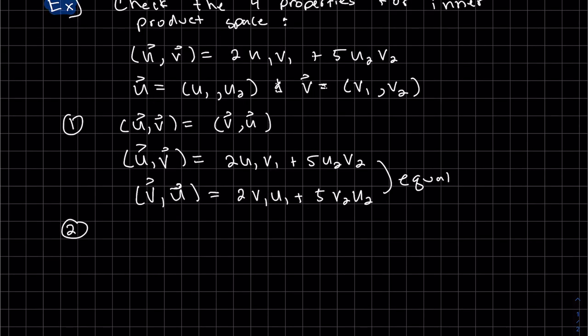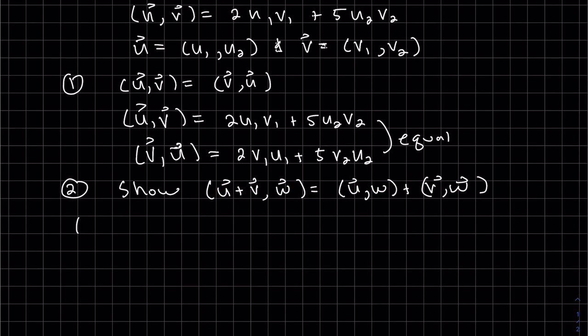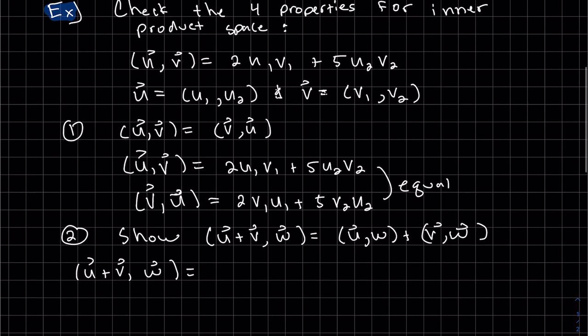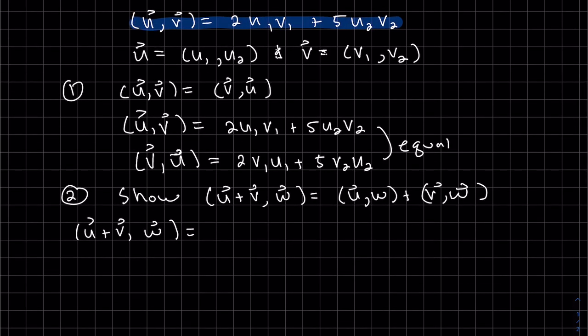Okay, our second property. We're going to show this property. And so we're going to start with the left side, and we're going to transform it to the right. So here's my left-hand side. And let's use the definition of what the inner product is. This is the inner product. Let's write out what u plus v is so we can see it clearly. So we just use our normal addition of vectors. So if I add u and v, u₁ plus v₁, you add the components.